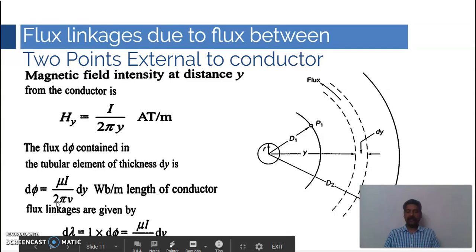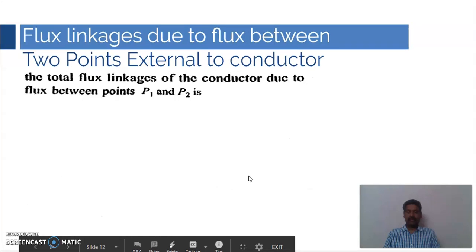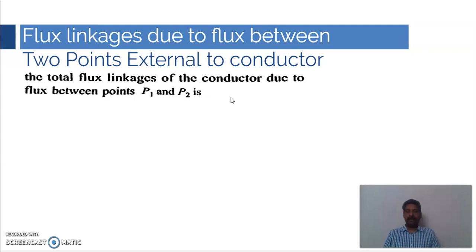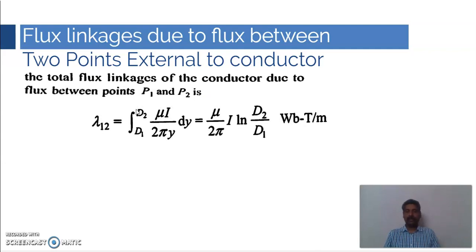To calculate the total flux linkages, we integrate λ from D1 to D2. The total flux linkage of the conductor due to flux between points P1 and P2 is λ₁₂ integrated from D1 to D2. Since μ and 2π are constants, we get the integral of dy/y, which equals the natural logarithm of y. Substituting the limits D1 and D2, we get λ₁₂ = (μI / 2π) × ln(D2/D1) Weber-turns per meter.